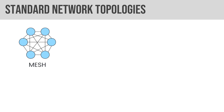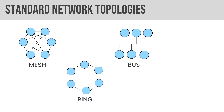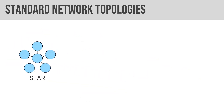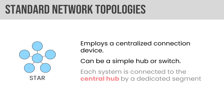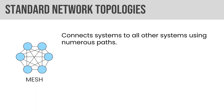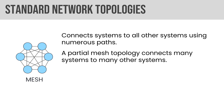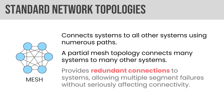Let's talk through the standard network topologies. There's a core four they're going to test you on: mesh, ring, bus, and star. A star network employs a centralized connection device — often a hub or switch. Mesh means all systems connect to all other systems using multiple paths; a partial mesh connects many but not necessarily all. Mesh provides redundant connections — the real advantage — allowing for multiple segment failures without affecting end-to-end connectivity, because you can still use alternate paths.